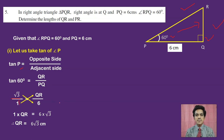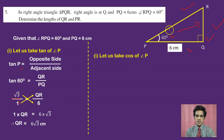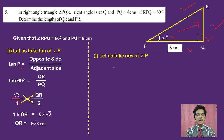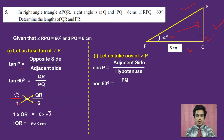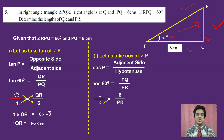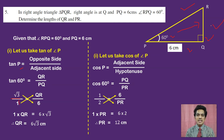Now to find the hypotenuse PR, I will use cos. Cos P equals adjacent by hypotenuse, so cos 60 = PQ by PR. Cos 60 is 1 by 2, so 1 by 2 = 6 by PR. Cross multiplying: PR = 6 × 2 = 12 cm.